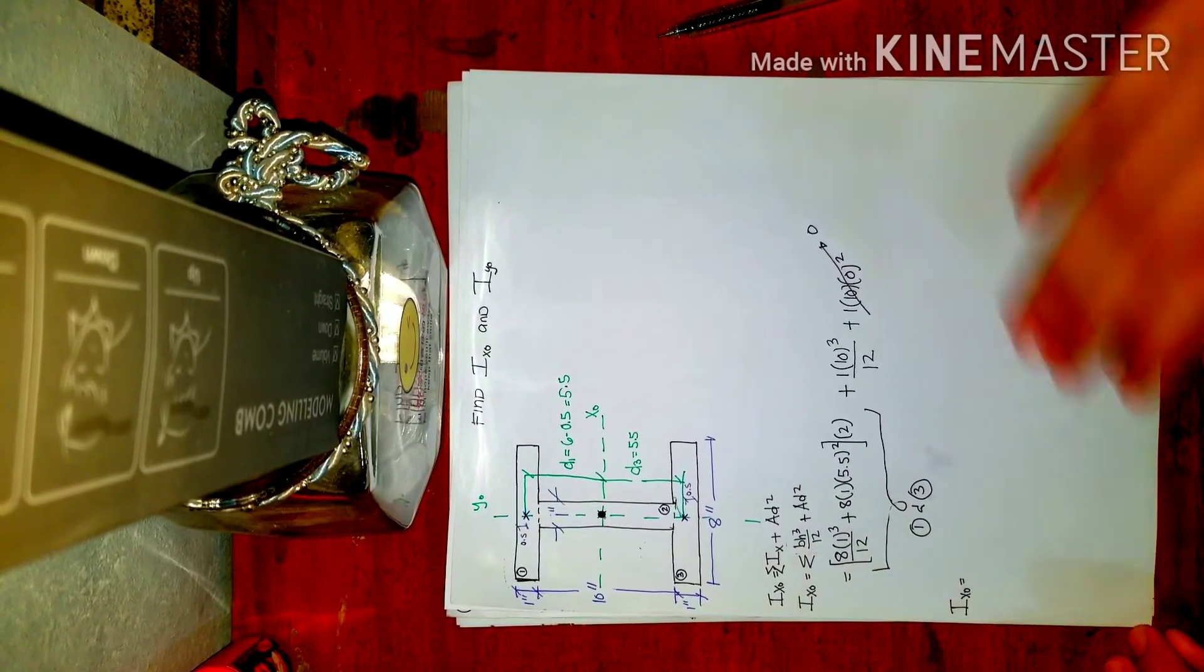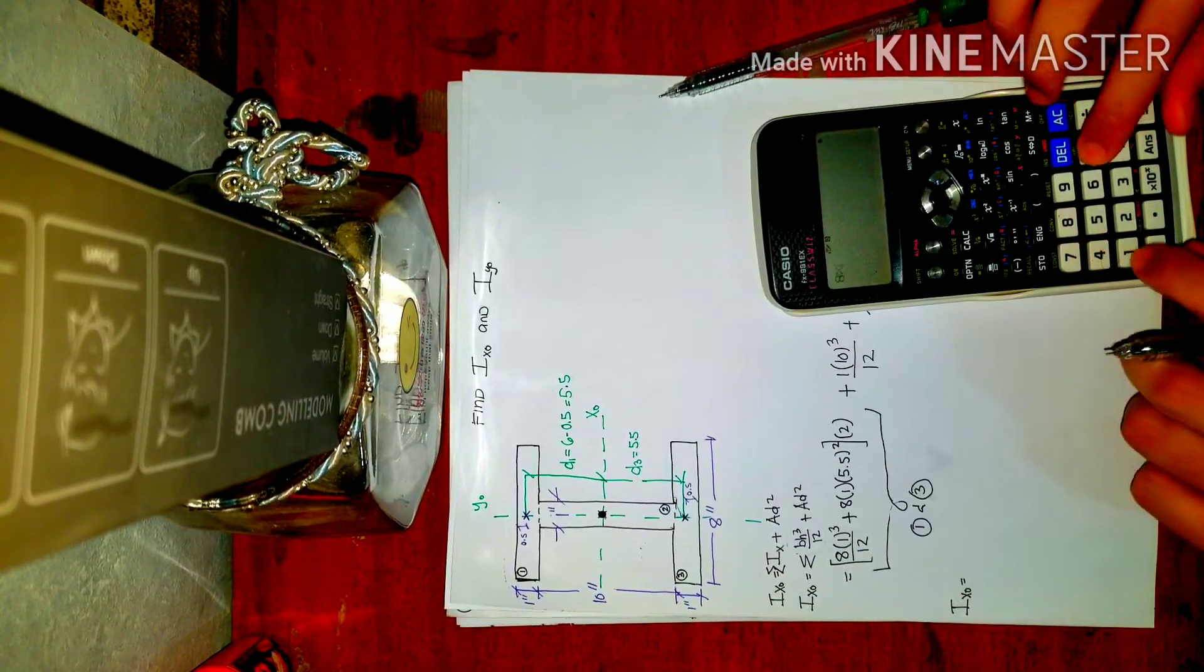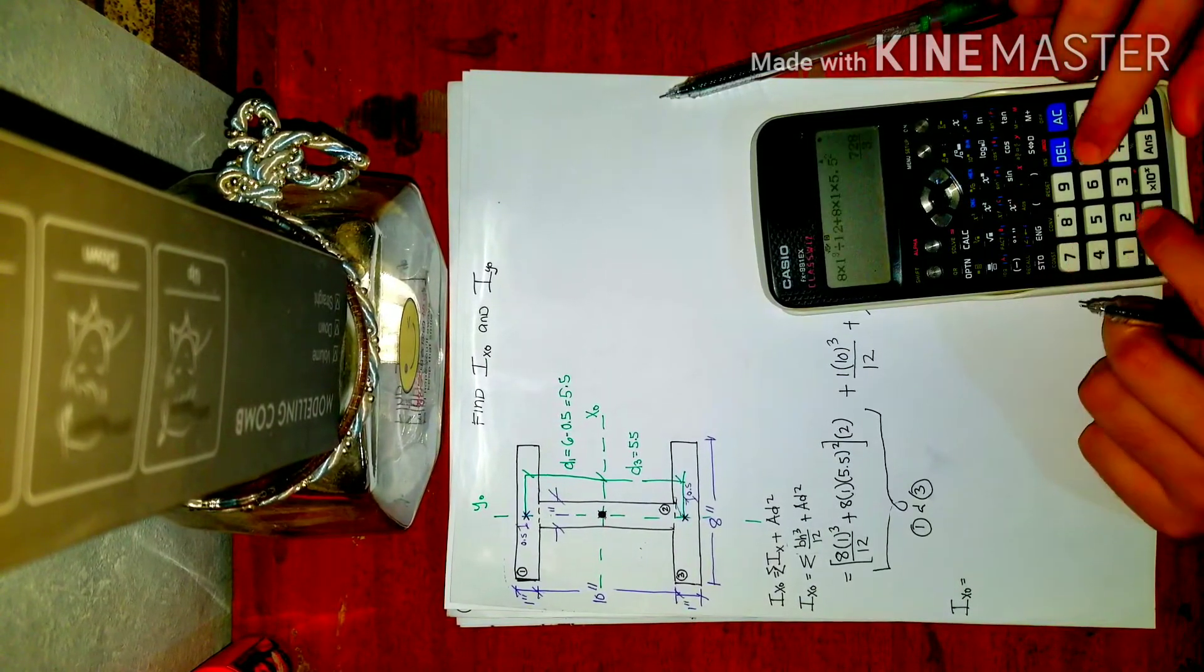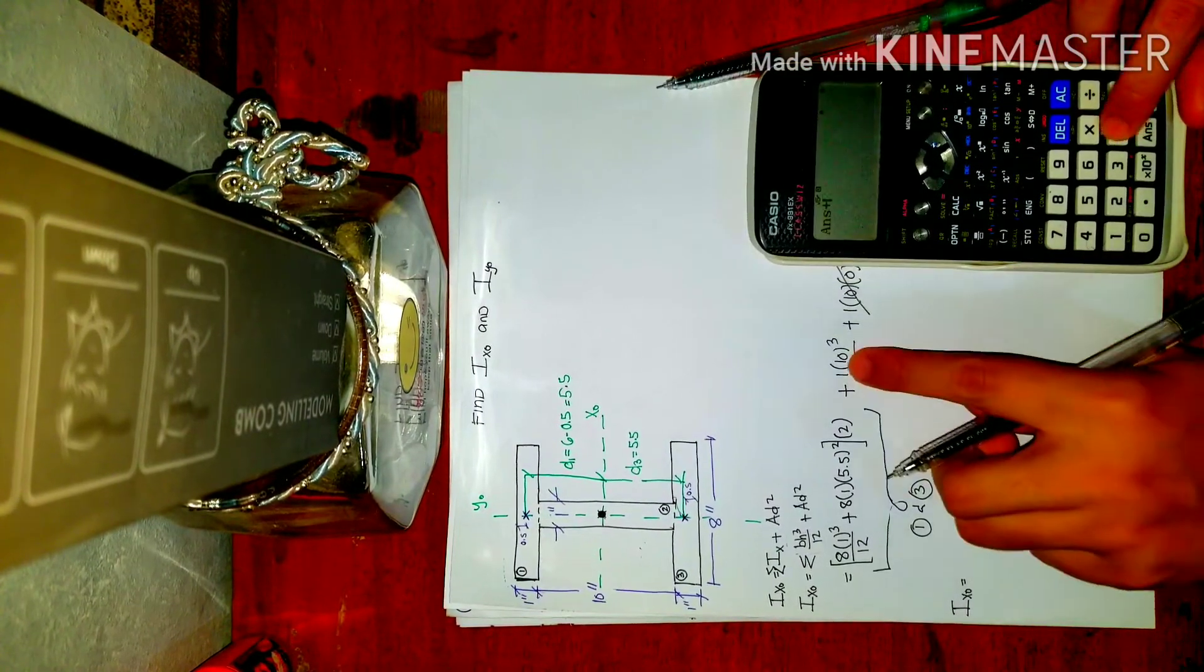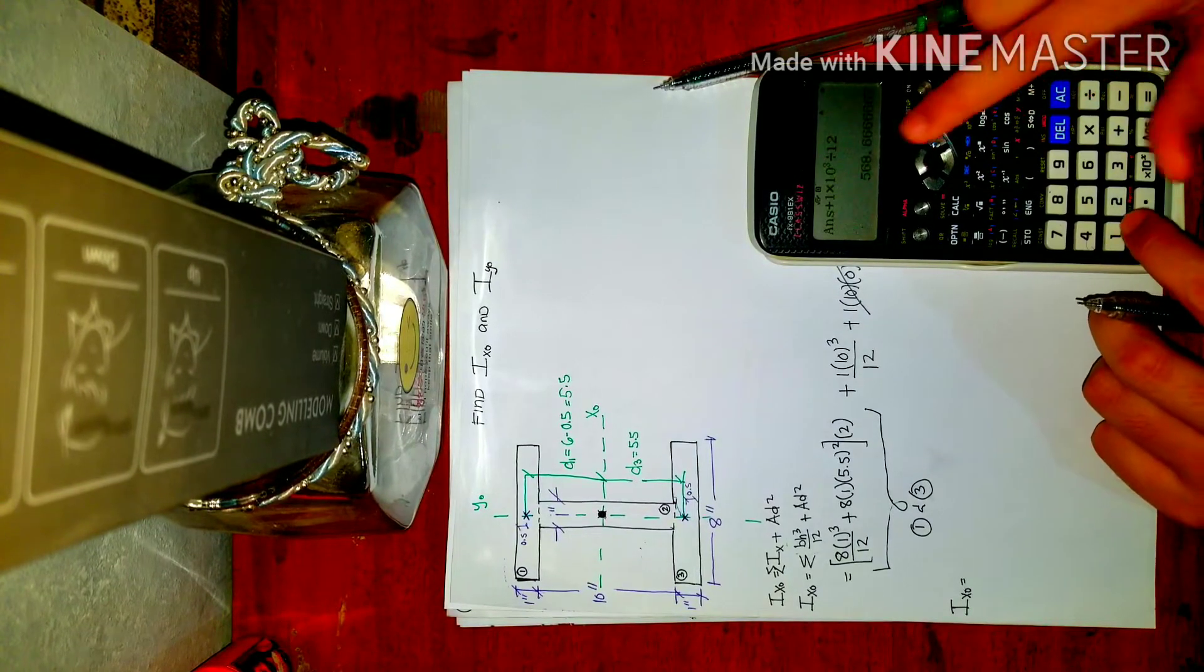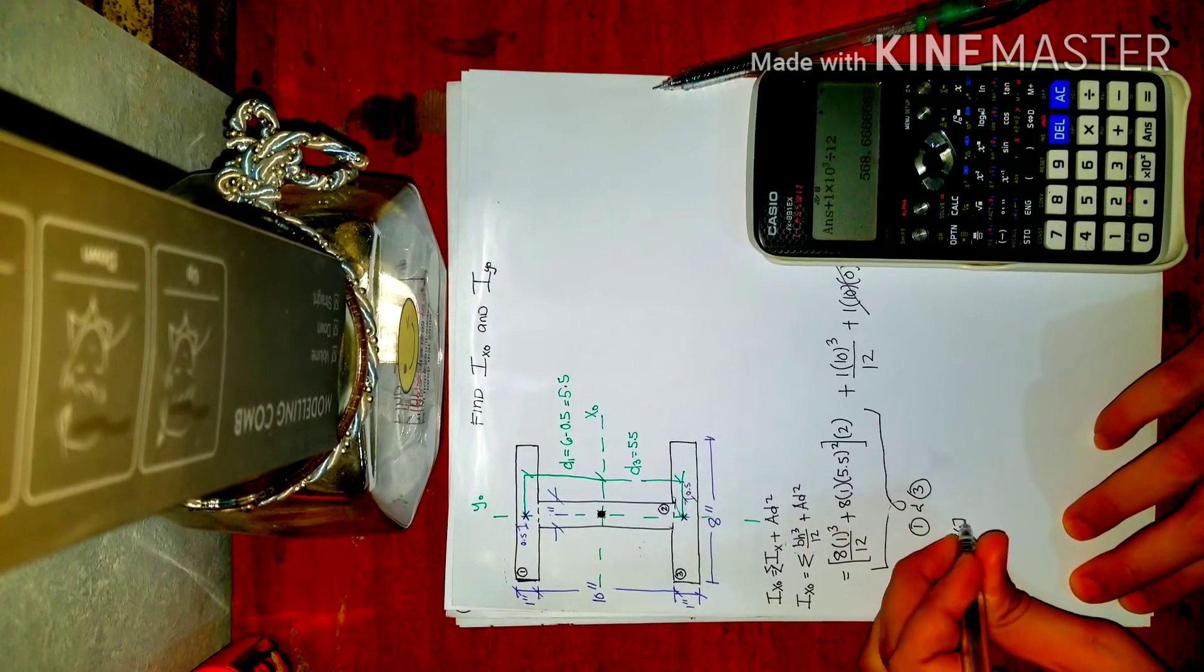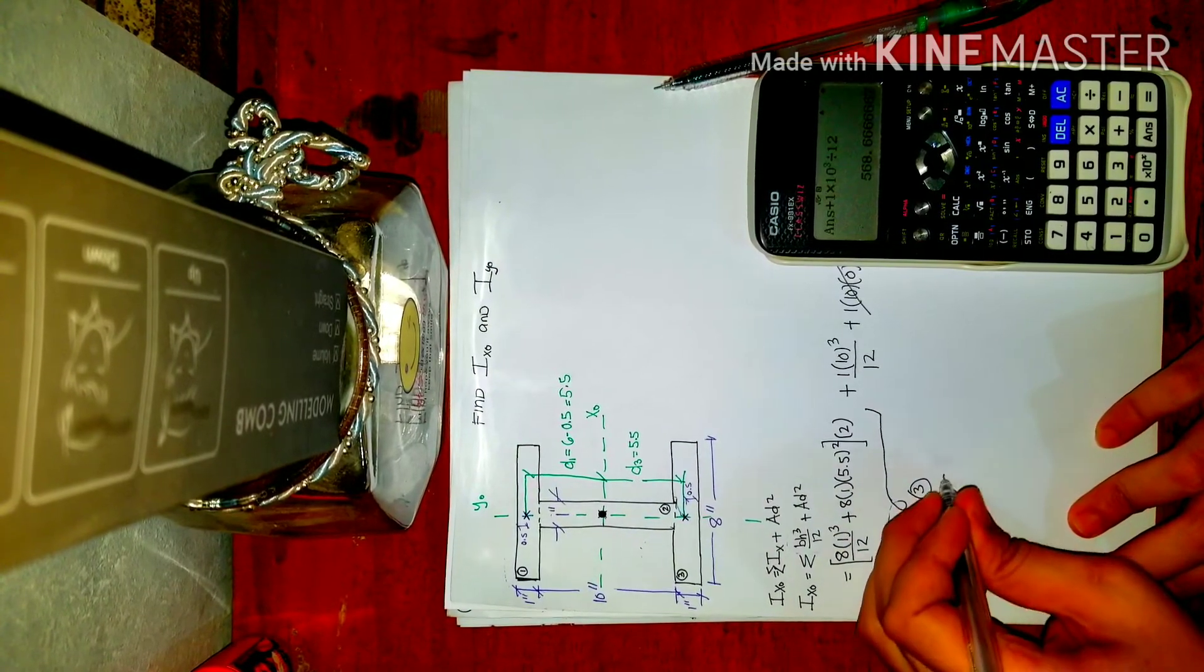And we can now compute for Ix-sub-o. So 8 times 1 cubed divided by 12 plus 8 times 1 times 5.5 squared, multiply by 2. And then plus 1 times 10 cubed divided by 12. So that is 568.6667. So what's our unit? That is inches to the fourth.